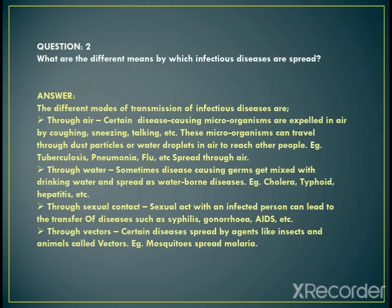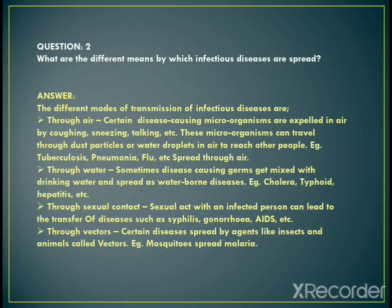Question number 2: What are the different means by which infectious diseases are spread? They asked about the different agents which can spread infectious disease. First, through air: certain disease-causing microbes are expelled in the air by coughing, sneezing, talking, etc. These microorganisms travel through dust particles or water droplets in the air to reach other people. Such diseases are called airborne diseases. Examples include tuberculosis, pneumonia, and flu.